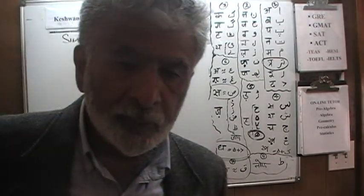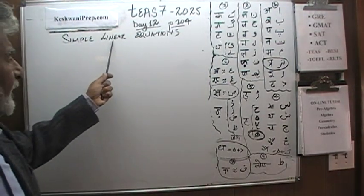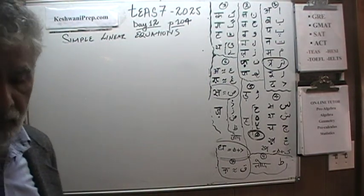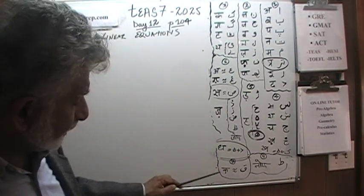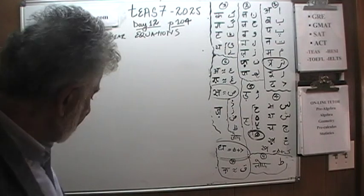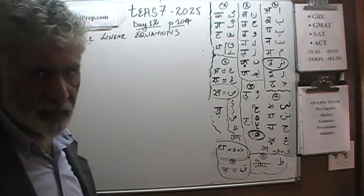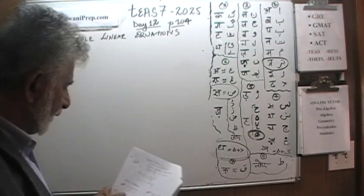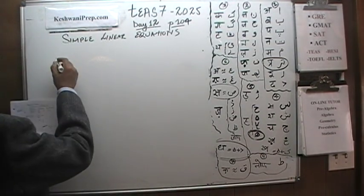This is a continuation of what we did yesterday. Yesterday we solved five very simple linear equations. And now on page number 104 we have some practice problems — five of them again. We are going to knock them down one after the other. Very simple, very straightforward. Here is the first one.